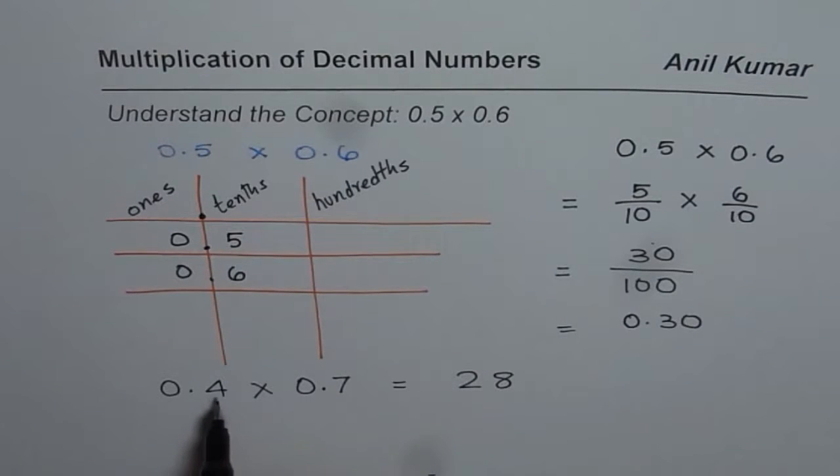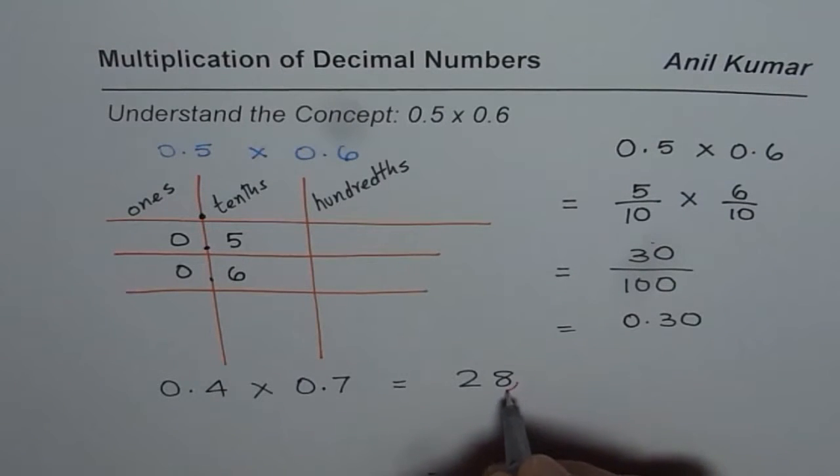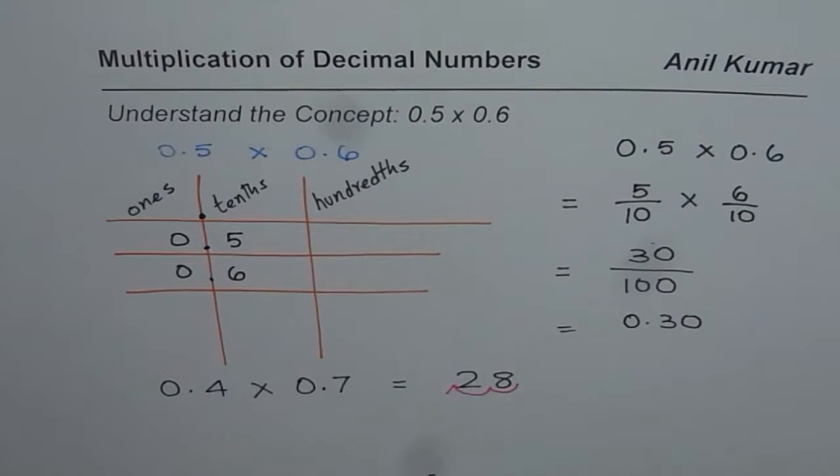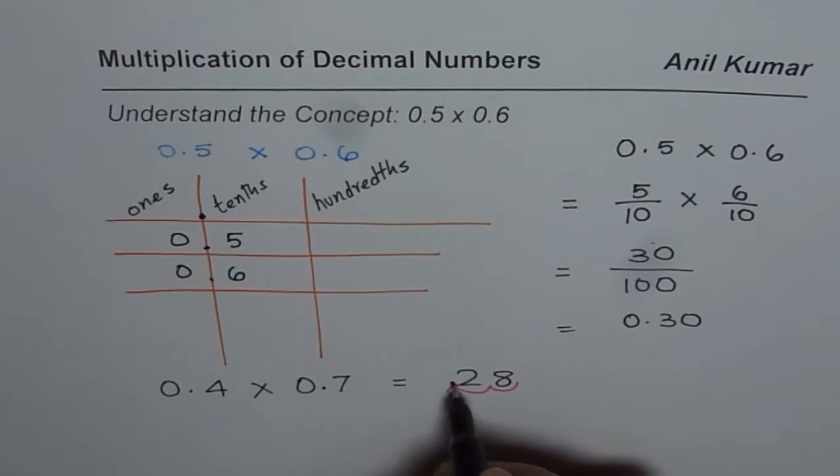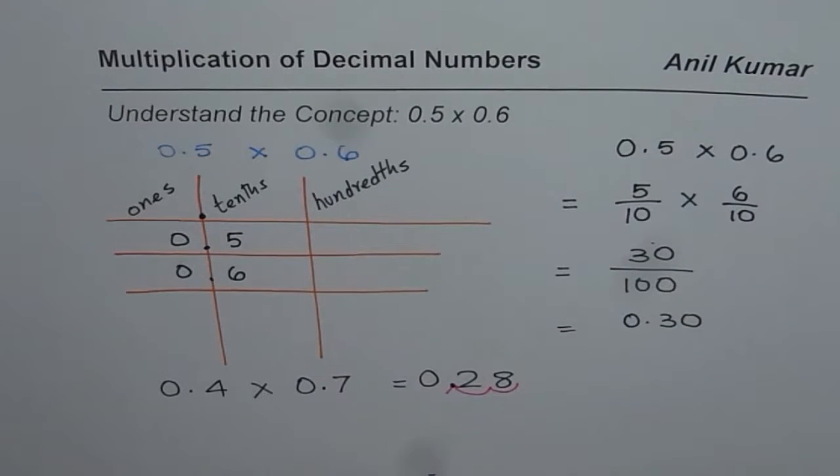Now how many numbers are after decimal? There are 2 numbers after decimal. So we are going to place decimal after 2 numbers. So decimal is placed here. So what we really get is 0.28. We should write 0 before it in the ones position. It is a good practice. So that is also a direct way of multiplying decimal numbers.